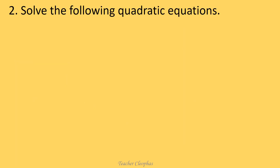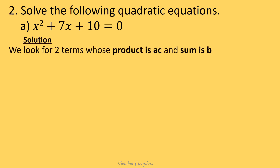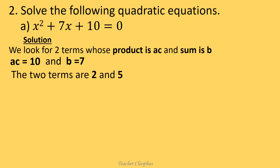Our second example: solve the following quadratic equations. Equation a: x squared plus 7x plus 10 equals to zero. We look for two terms whose product is ac and sum is b. For that matter, our ac is 10 and b is 7. So we are looking for two numbers which, when multiplied, give us 10 and when added give us 7. The numbers are 2 and 5. So in our equation, we substitute for 7x with 2x plus 5x.